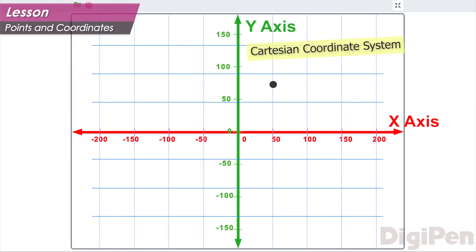This point's x-coordinate is 50 and its y-coordinate is 75, so we say it's at 50, 75.